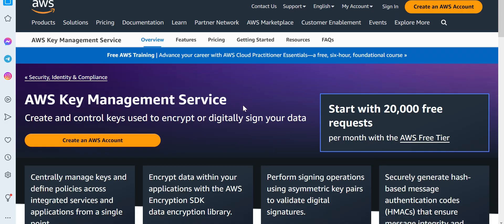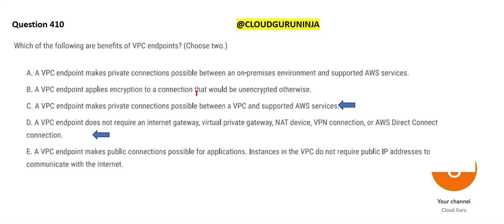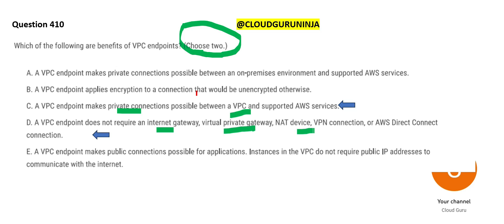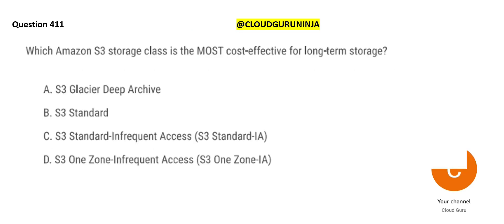VPC endpoints make private connections, not public ones — so the public connection option is wrong. VPC is not an encryption solution; for encryption, use services like KMS. We are left with two answers, and the question asks us to choose two. Option C makes private connections between VPC and supported AWS services. Option D — it does not require an internet gateway, virtual gateway, or NAT device. That is the beauty of VPC endpoints.